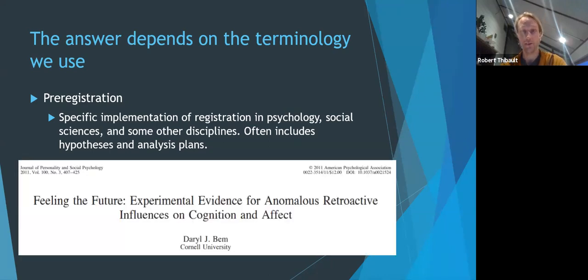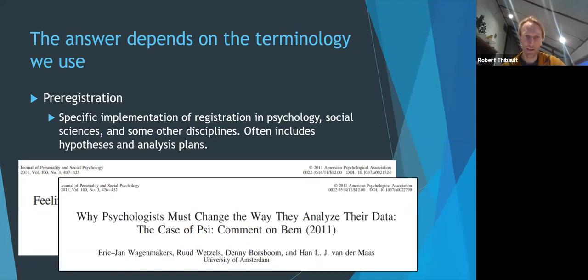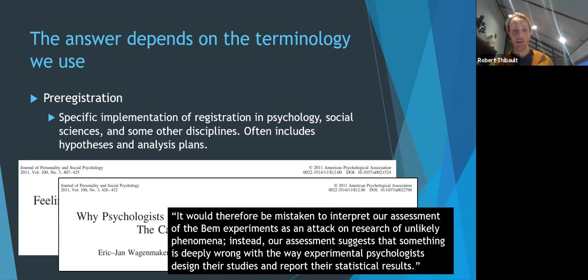One of the drivers of pre-registration in psychology came from this paper where Daryl Bem showed that extrasensory perception or parapsychology is real, that people have extrasensory perception. And he published this using kind of standard methods in psychology. In response to that paper E.J. Wagenmakers and colleagues, well they made a response to that paper and they showed that basically Daryl Bem had used normal ways of doing psychology research and so that either A ESP extrasensory perception is real or B there's a major problem in how we're doing research in psychology and he has this quote at the end that I quite like says it would therefore be mistaken to interpret our assessment of the BEM experiments as an attack on a research of unlikely phenomenon. Instead our assessment suggests that something is deeply wrong with the way experimental psychologists design their studies and report their statistical results.